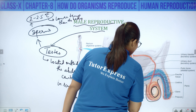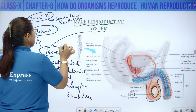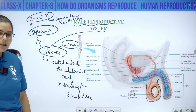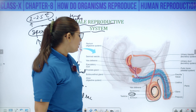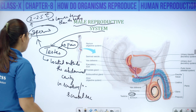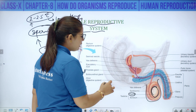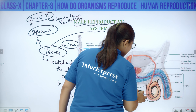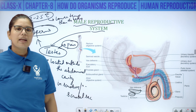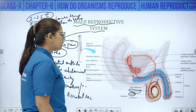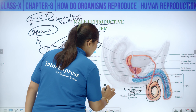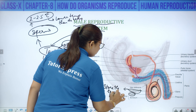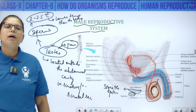There is a pair of testes in a human being — two testes. Above the testis there is a coiled structure surrounding it, called the epididymis. The epididymis stores the sperm. It stores the sperm until it matures. Once the sperm matures, it will be moved forward.